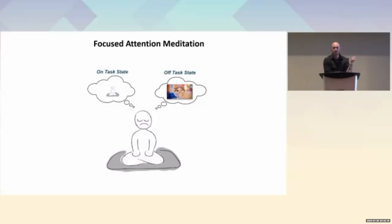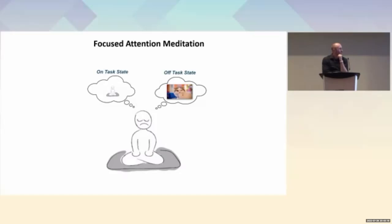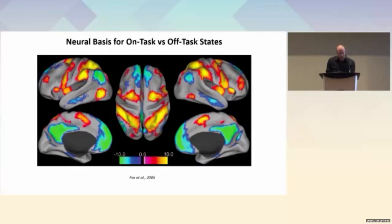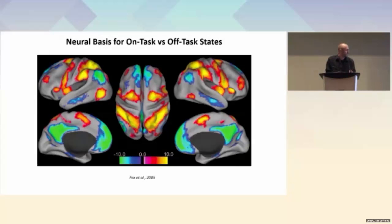It's thought that two macro-scale networks distributed across frontal-parietal cortices subserve the on-task or off-task state. The default mode network, outlined here in green/blue, contributes to exploratory cognition and mind wandering, whereas the frontal-parietal network, outlined in orange/red, is more involved in maintaining an on-task state.